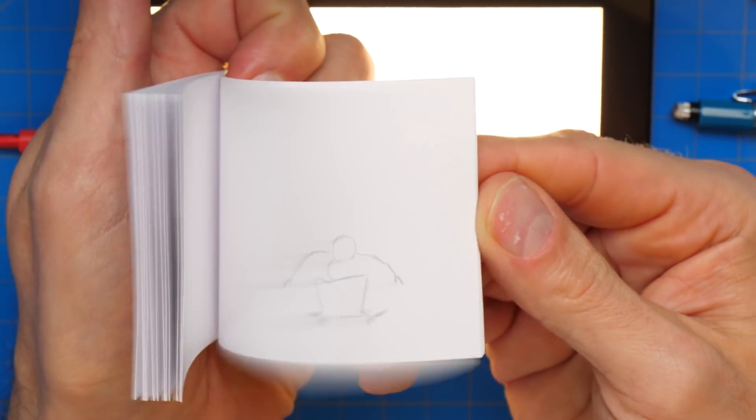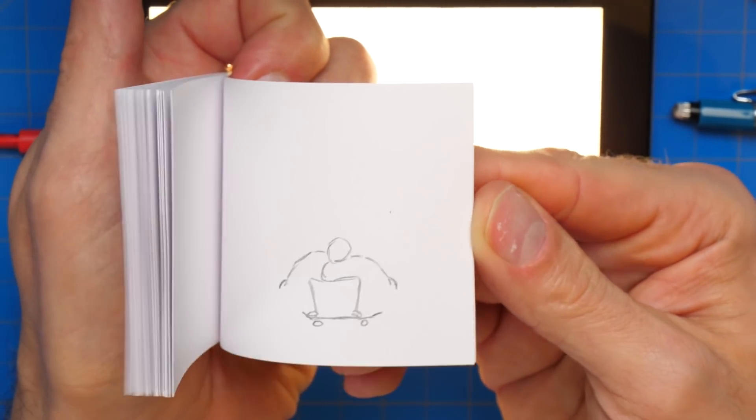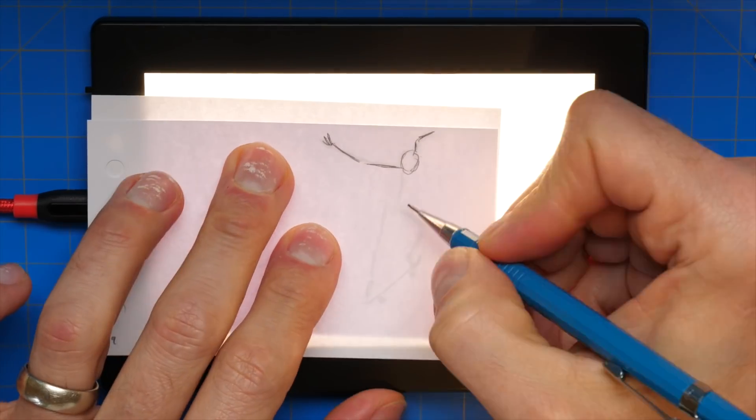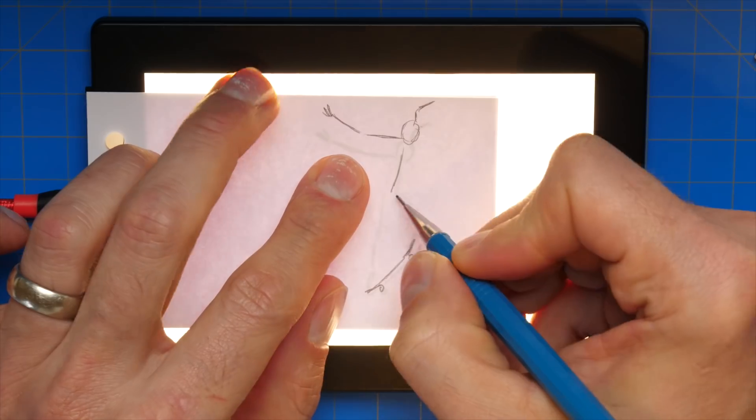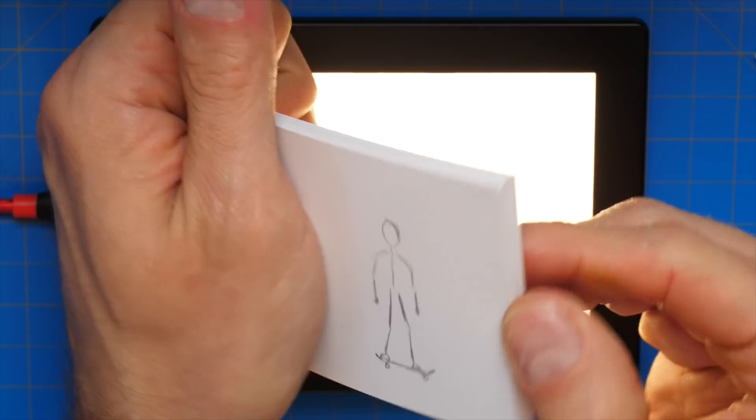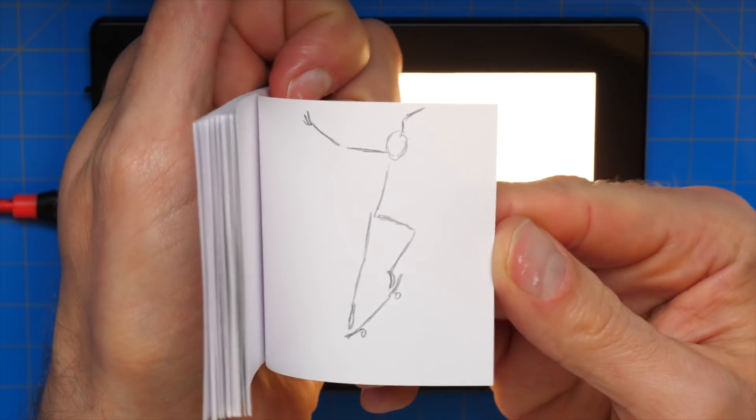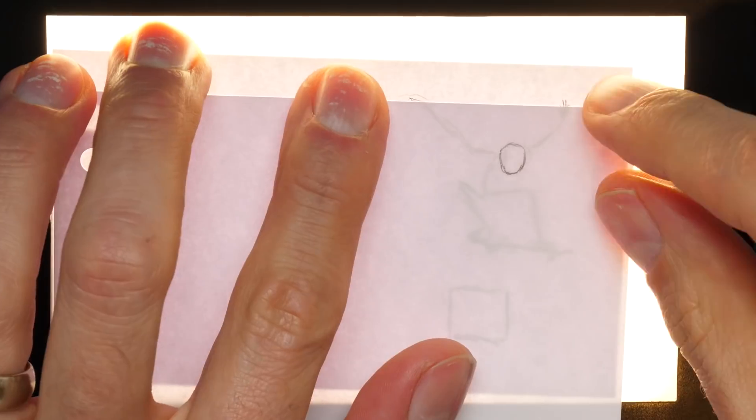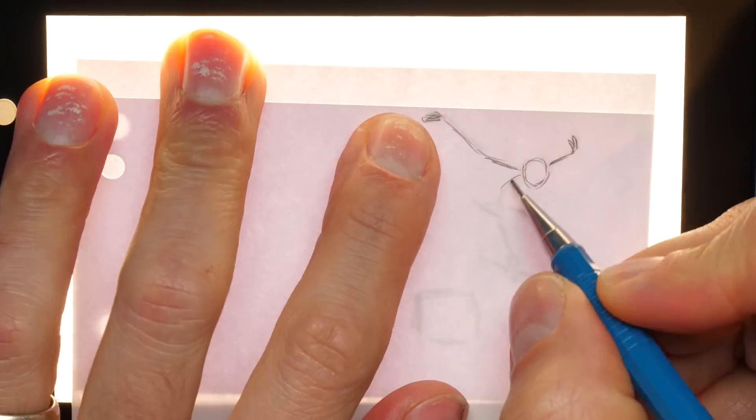So here up front, I'm taking his pose lower to give more anticipation. And then when he jumps up, adding a little bit more stretch. And then taking him higher up in the air once he's in the air. And then I'll try to add a little more impact when he hits the ground.